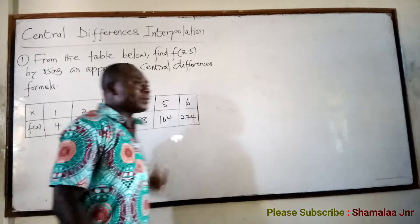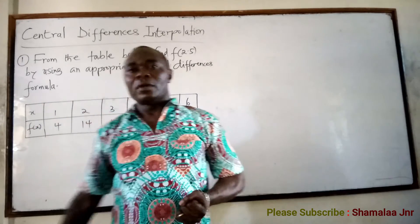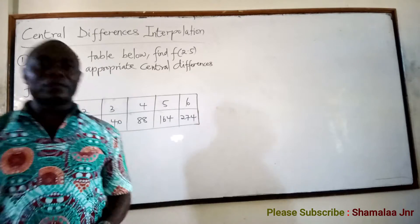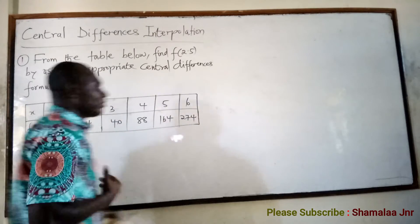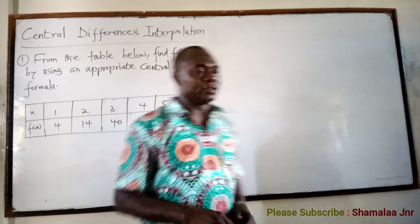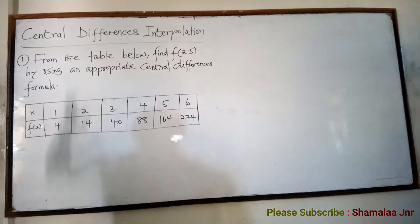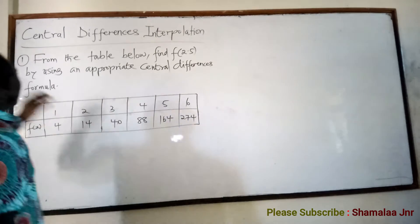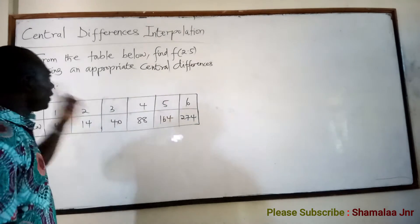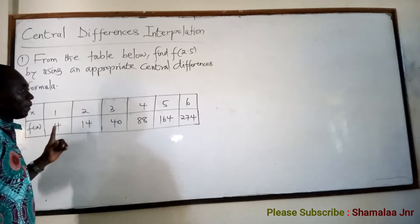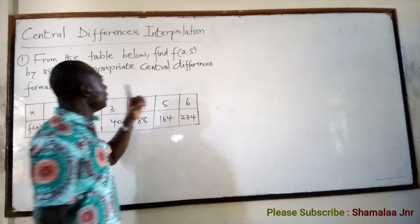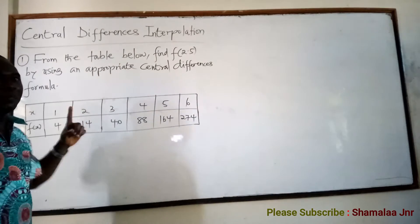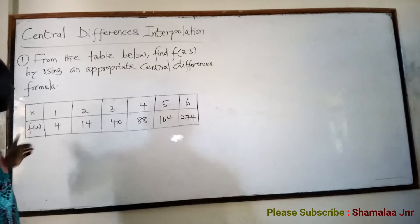Now to do this, I want us to look at a question. I believe that after solving this question, you should be able to solve any question on central differences interpolation. The question is: from the table below, find f of 2.5 by using an appropriate central differences formula. So I have been asked to find the functional value of 2.5 by using an appropriate central differences formula.